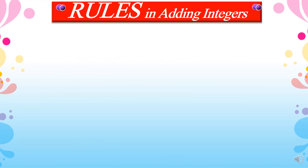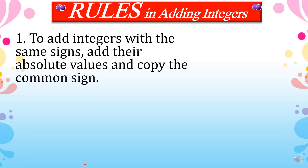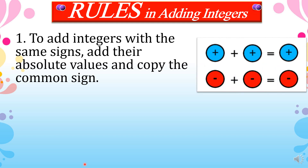Here are the rules in adding integers. First, to add integers with the same signs, add their absolute values and copy the common sign. When the two integers that you are adding are both positive, then the sign of the sum is also positive. And if you are adding two integers that are both negative, then the sign of the sum is also negative.